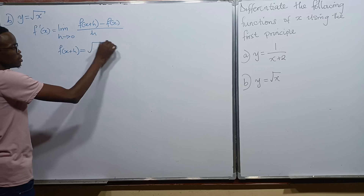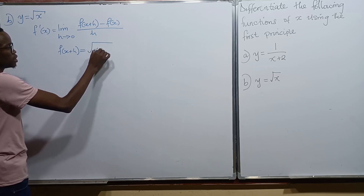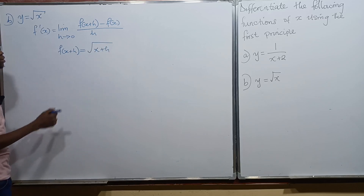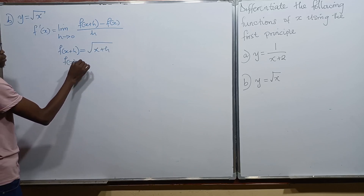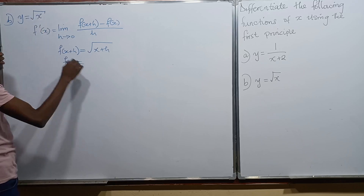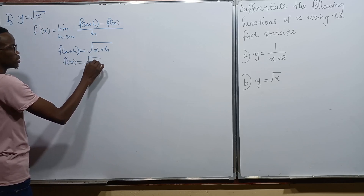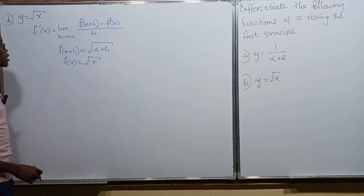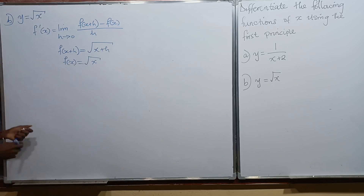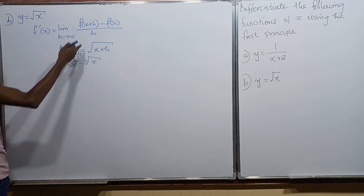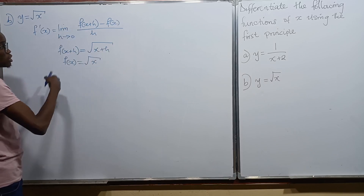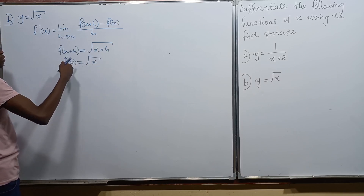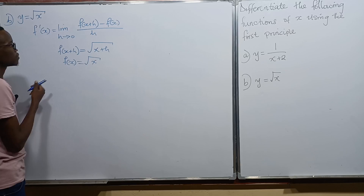This means f of x plus h becomes the square root of x plus h, and f of x is just the square root of x. Since we have both expressions, we make substitutions into the formula.